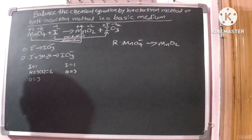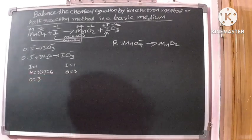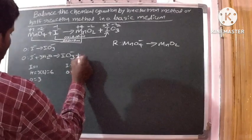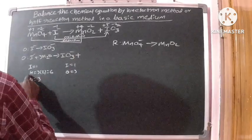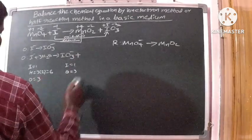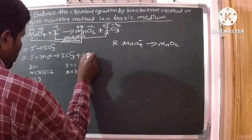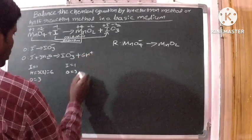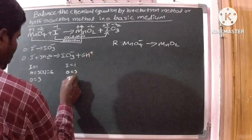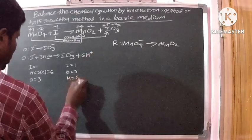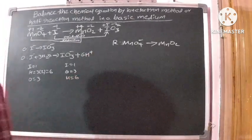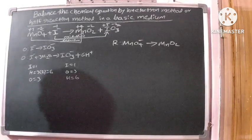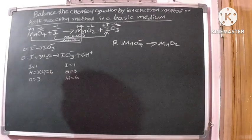Now we can balance the hydrogen atoms. To do this, we add H⁺ ions. There are 6 hydrogen atoms present, so we add 6 H⁺ ions to the products side. The number of atoms are now balanced in the oxidation half reaction.